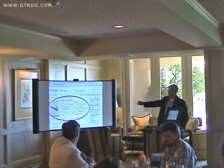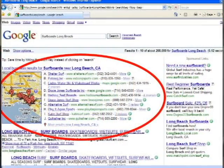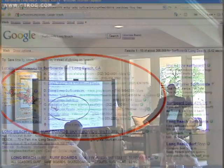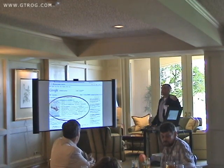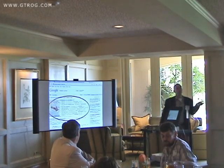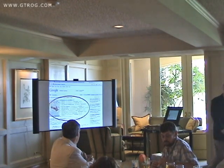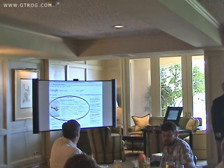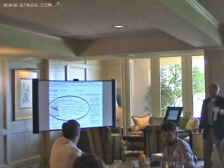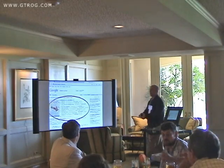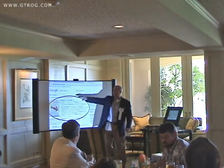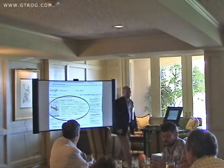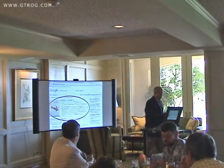Have any of you ever done a search and gotten that map result? That is the first tip we're going to talk about — Google Local Business. It just changed its name. Stuff is changing all the time. Google changed it to Google Places two weeks ago, but it's Google Local Business, and it's actually part of Google Maps — a division of Google Maps.